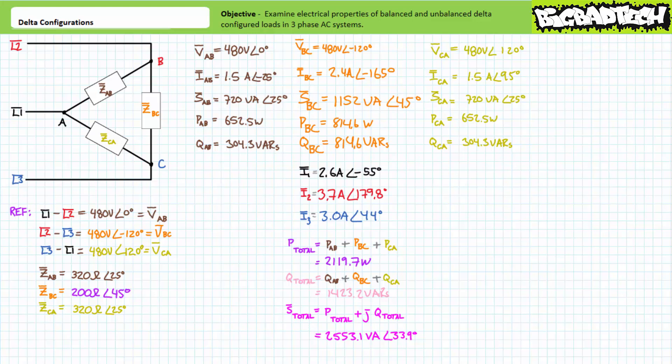That's about it for today. Every single calculation in this lecture on delta configurations made use of the line-to-line voltage — with L1 with respect to L2 as the point of reference — which makes total sense given loads in delta configurations experience the line-to-line voltage. If you wanted to reference everything with respect to a line-to-neutral voltage like L1, you'd have to shift everything by a relative 30 degrees. Delta-configured loads don't make use of the neutral connection, so my advice is to simply reference any system from the voltage it's actually making use of.